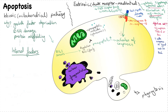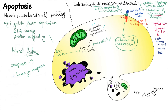Both the extrinsic and intrinsic pathways converge on the activation of initiator caspases, from which point the execution phase can start. A key difference is that the intrinsic pathway uses caspase 9 as its major caspase, whereas the extrinsic pathway uses caspase 8 and 10. One more point: the extrinsic pathway can be inhibited by a protein called FLIP.